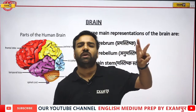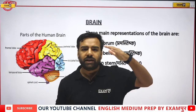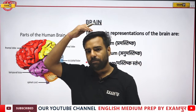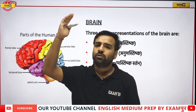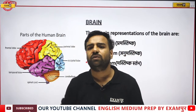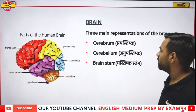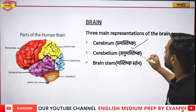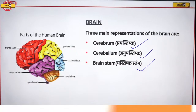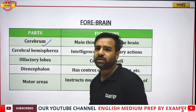The brain is divided into three parts: forebrain, midbrain, and hindbrain. Going into detail, the forebrain includes the cerebrum; then there is the cerebellum; and then the brain stem.